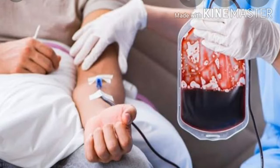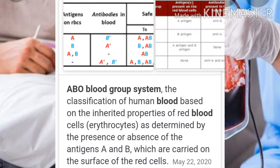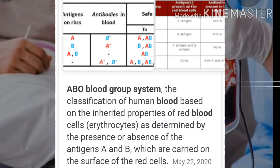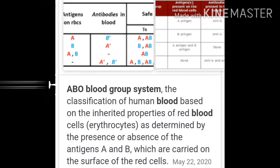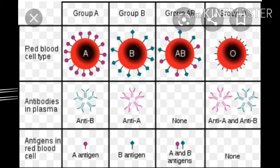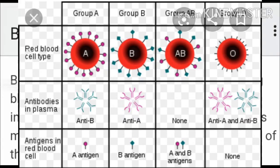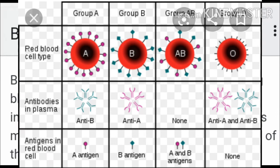The person who donates his blood for transfusion into the body of another person is called the donor, and the person who receives the blood is called the recipient. The donor's blood is termed incompatible if it does not match with that of the recipient. The donor's blood must be compatible — that is, matching — with the recipient's blood.